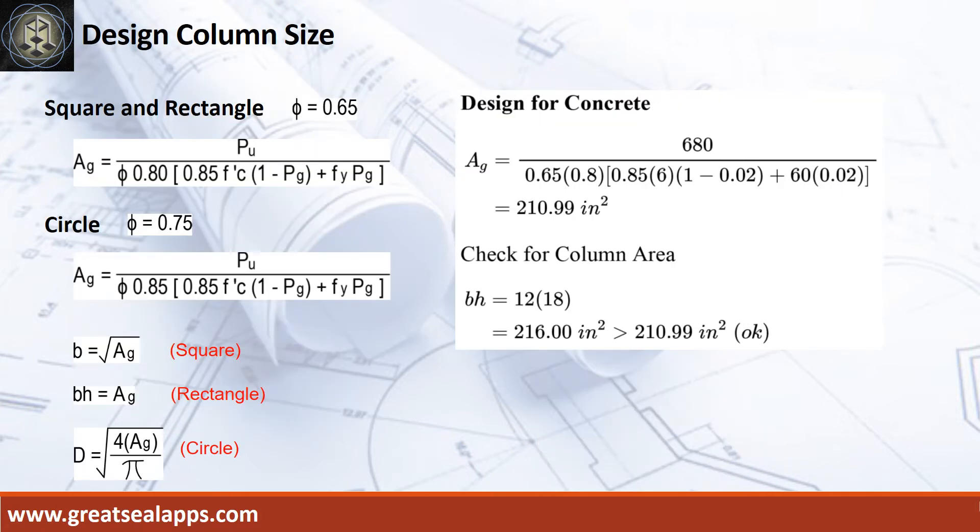Given factored load equals 680 kips. The gross area of section is 210.99 square inches. The width of column is 12 inches, and the length of column is 18 inches.